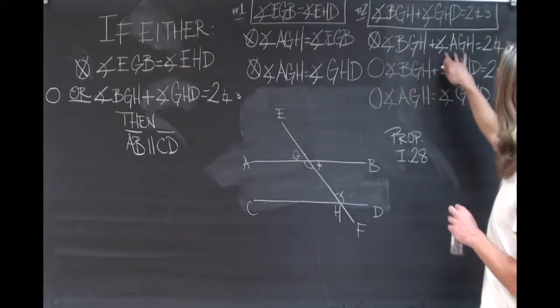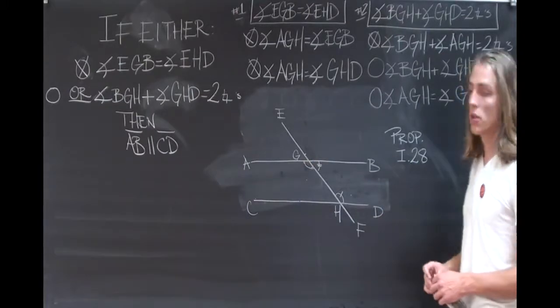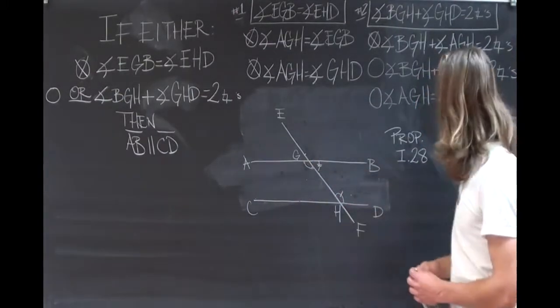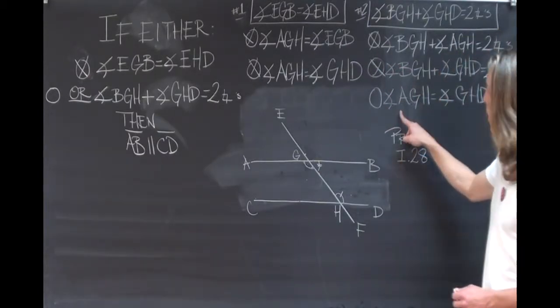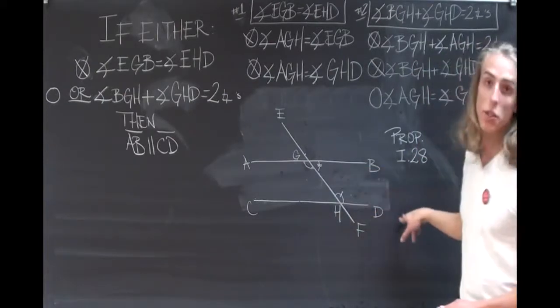Now, seeing here that both of these pairs of angles add up to two right angles, we can subtract the common angle BGH, and we're left with the equality AGH and GHD.